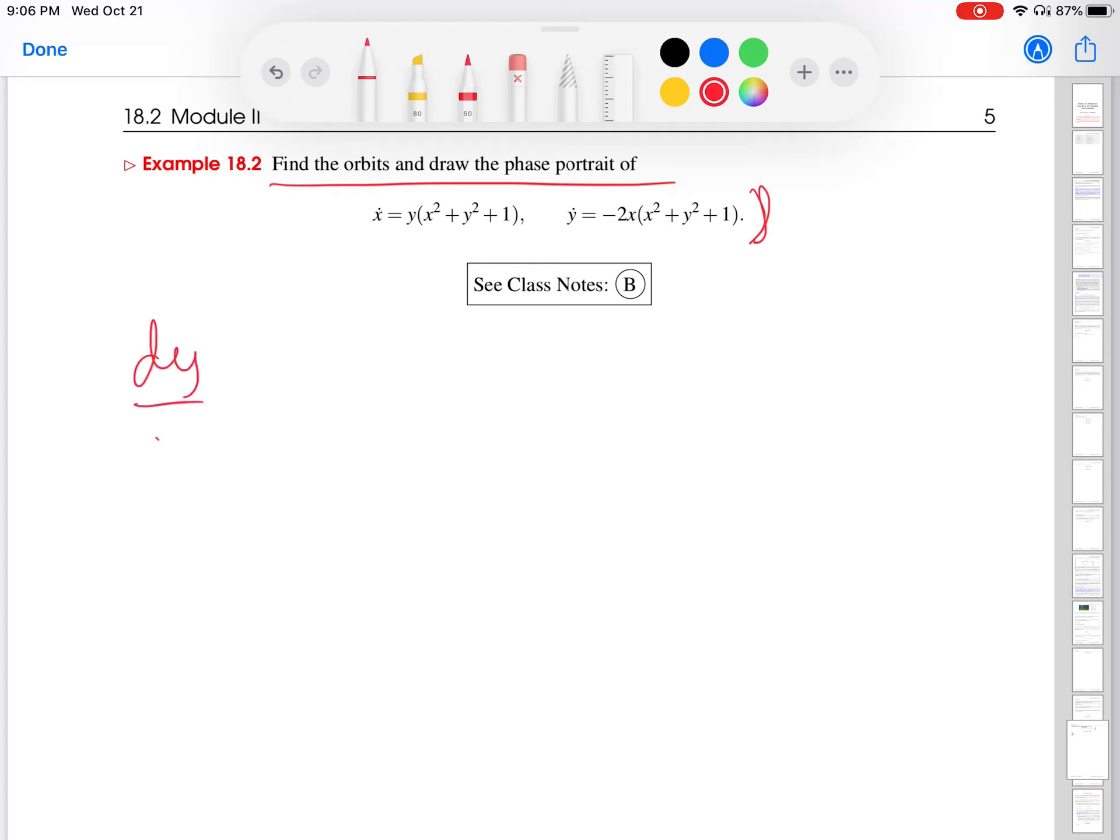That method is going to have us construct the differential equation, first order differential equation, given by y dot over x dot. As a quick intuitive derivation here, dy over dt divided by dx over dt. If you think of the dt's as actual quantities that we can measure, and you think of this as a fraction bar, then we can cancel out the dt's, leaving dy over dx.